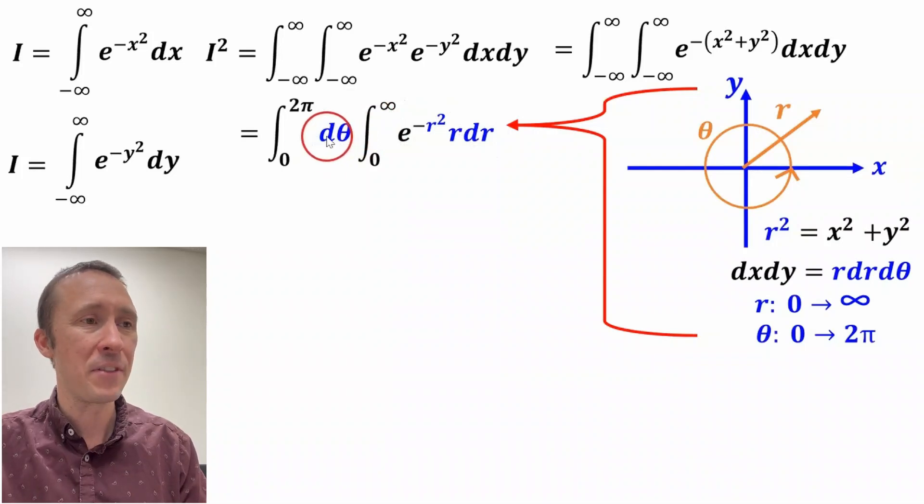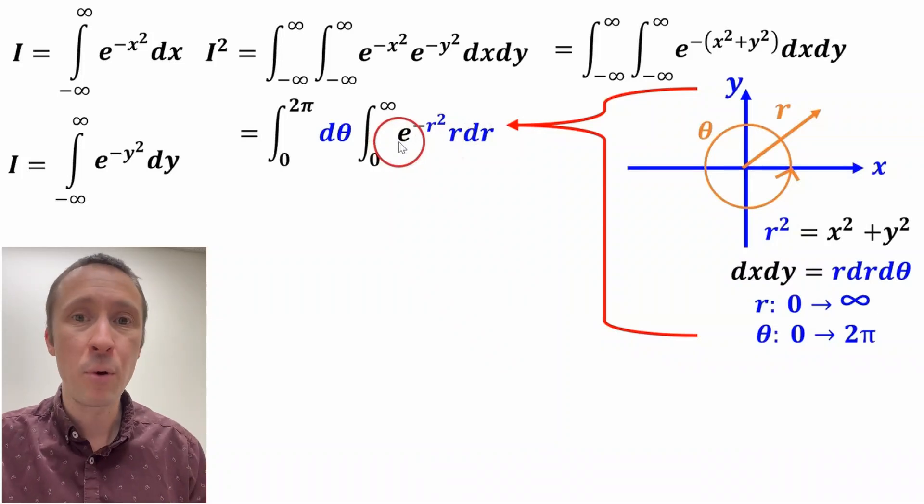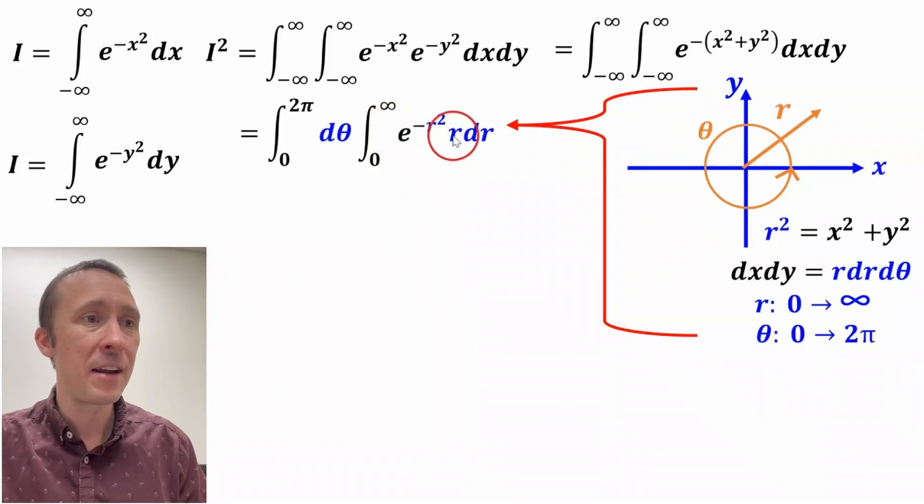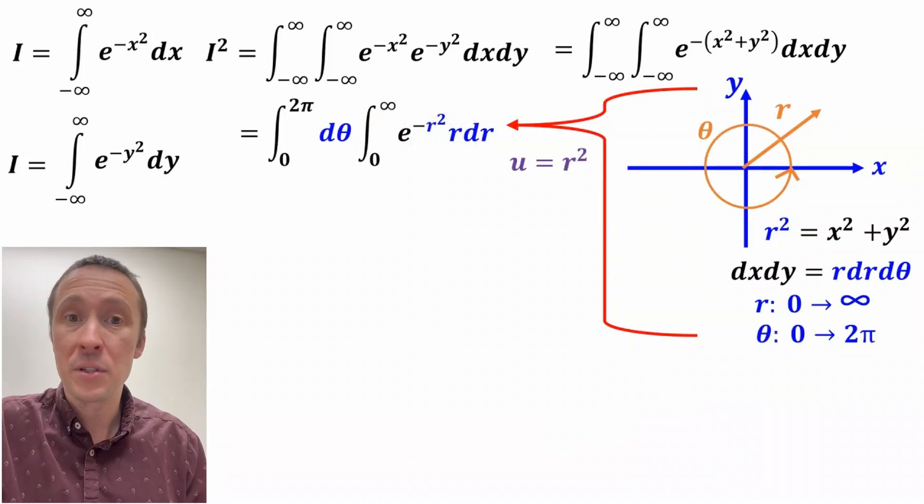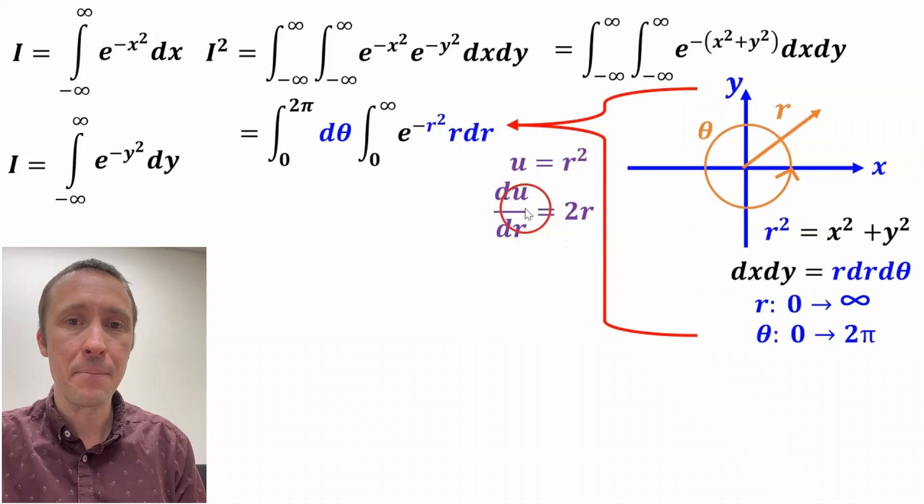And this is our r dr at this point. We've separated the variables because the integral of theta doesn't depend on r and vice versa. Okay, at this point, we can integrate it. To integrate the right-hand side, we're going to do a u substitution. So we'll set u equal to r squared. And if we take the derivative, du/dr equals 2r. And at this point, we can plug that in.